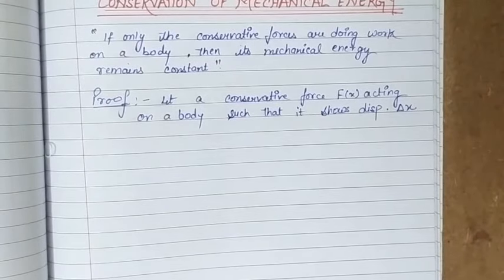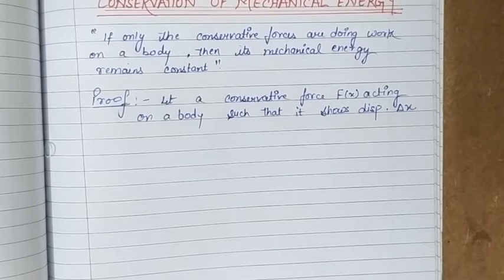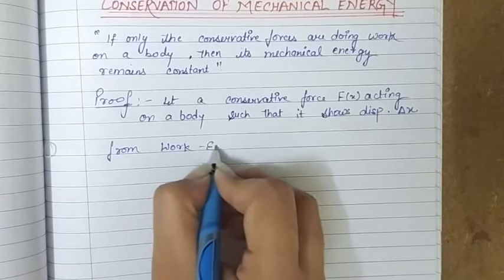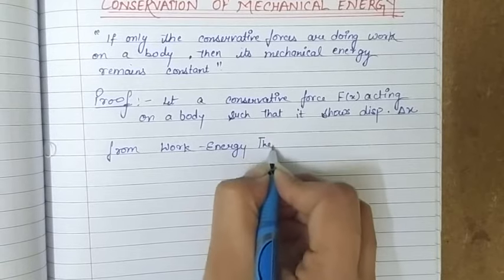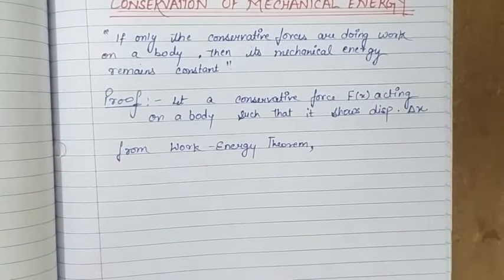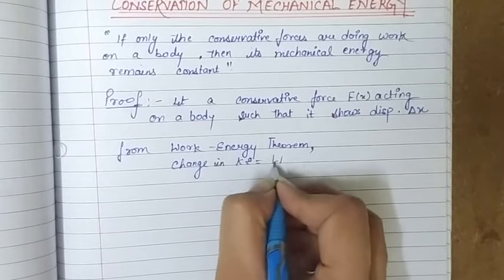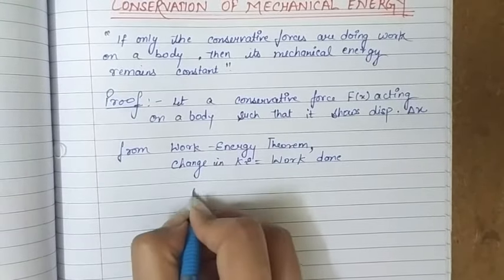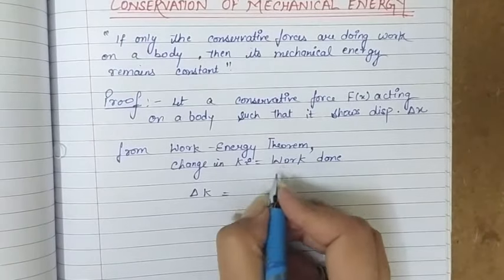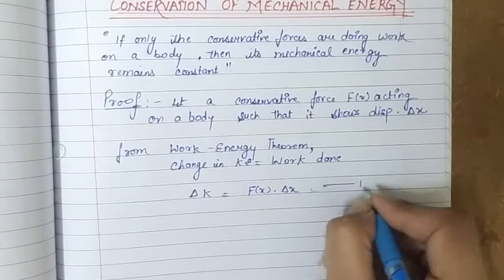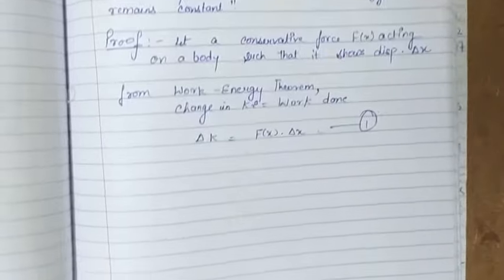From the work-energy theorem, we know that the work done is equal to the change in kinetic energy, and work done is given as the product of force and displacement. So from the work-energy theorem, the change in kinetic energy — delta K — is equal to the work done, which is force into displacement: Fx times delta x. Let this be equation number one.